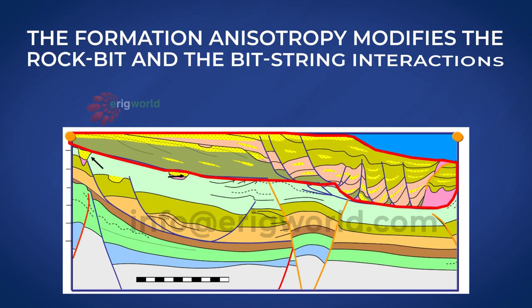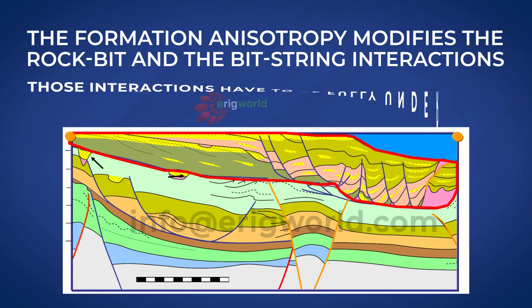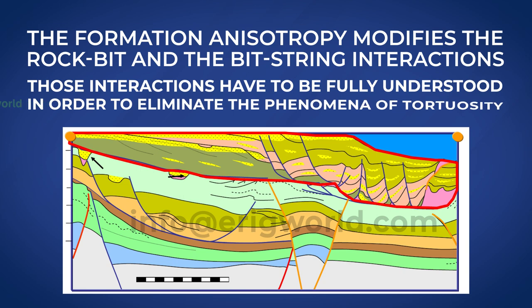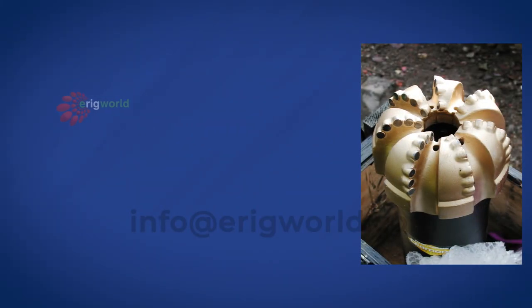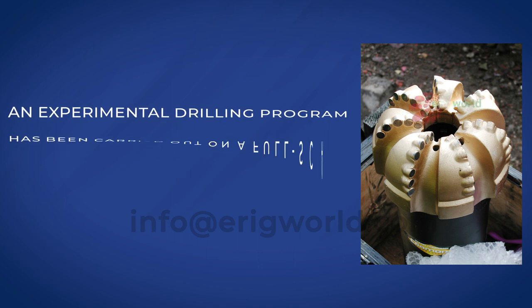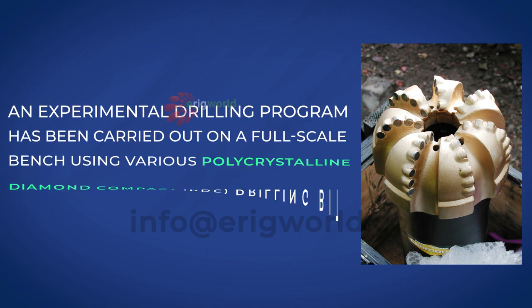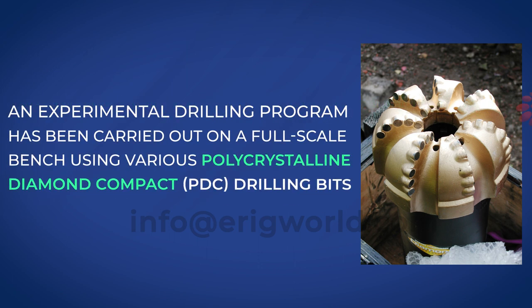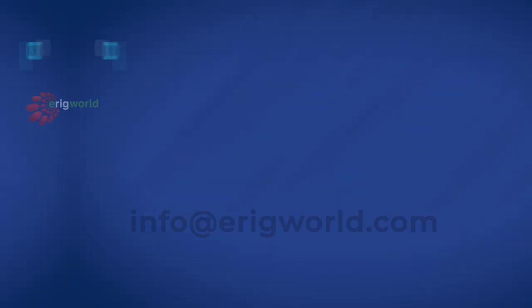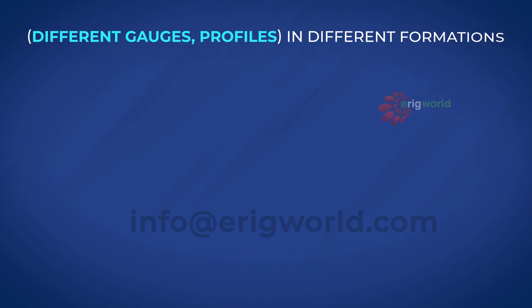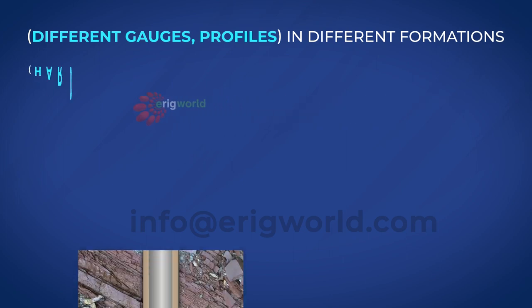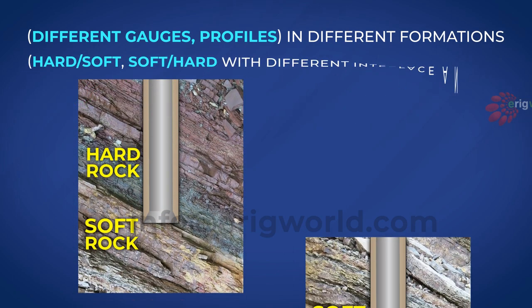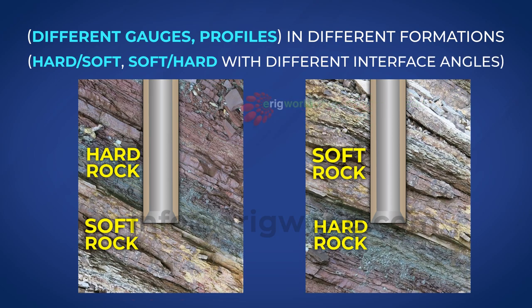Formation anisotropy modifies the rock-bit and bit string interactions. Those interactions must be fully understood in order to eliminate the phenomena of tortuosity. To do so, an experimental drilling program has been carried out on a full-scale bench using various polycrystalline diamond compact (PDC) drilling bits of different gauges and profiles, in different formations — hard to soft and soft to hard — with different interface angles.